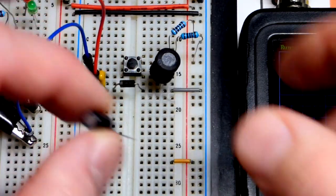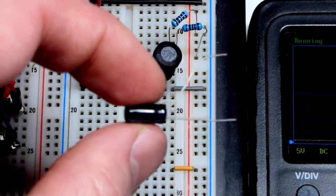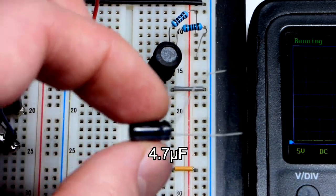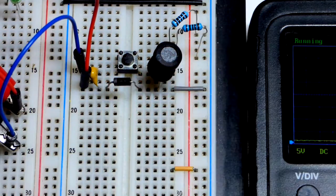So, one thing we could do is use a larger value capacitor. So I don't know if this is going to show up or not. But this is a 4.7 microfarad capacitor. So 10 times the capacitance. Let's see the voltage.